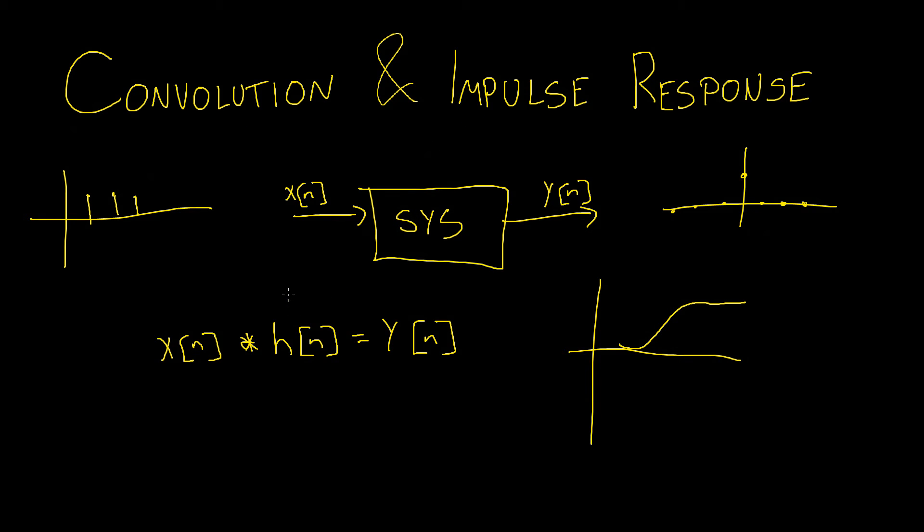The effects of convolution are only limited by the impulse response that you can calculate for a system. And then once you can calculate this impulse response you can model a system on that and expect any data that's passed through to be modified in the exact same way as the impulse response that was calculated.